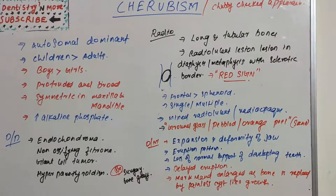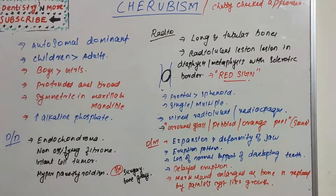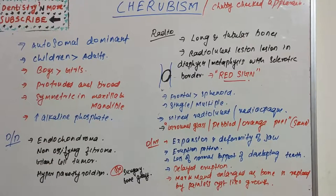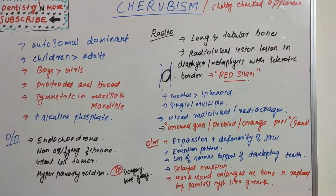Cherubism is an autosomal dominant disease which is most commonly seen in children rather than adults, and the male group is more affected than females. The most common feature is that the jaw is very broad and protruding, and both the maxilla and mandible will be affected, with symmetry of the involvement of these lesions.